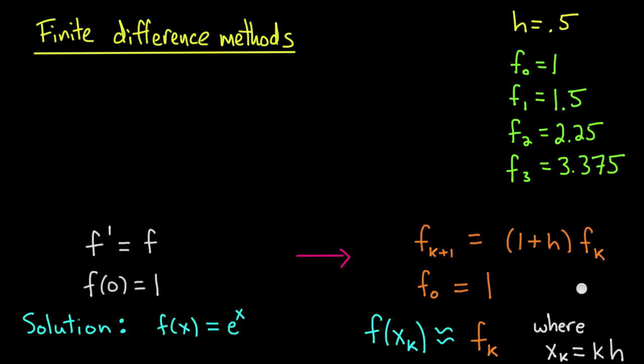I plug in f_1 to get f_2. Put in 1.5 for f_1, times 1 plus 0.5, that's 1.5 times 1.5, and I get f_2 which is 2.25, etc.